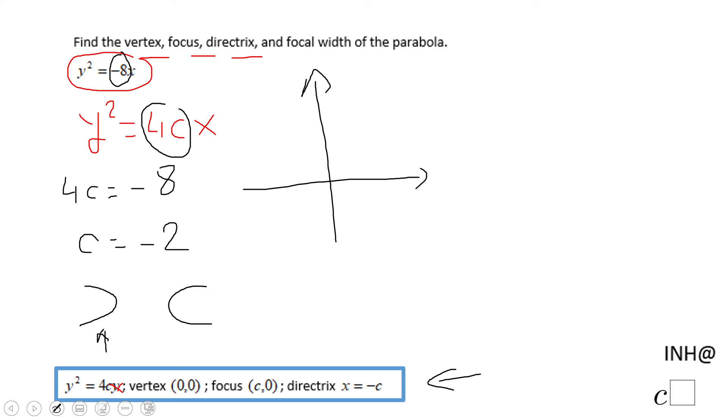The vertex will be (0,0) because that's the way the (0,0) parabola looks like. It's going to go like this.